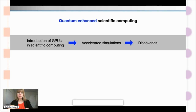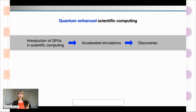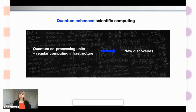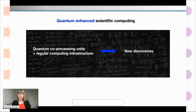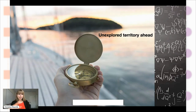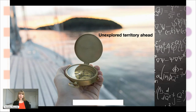The hope or dream is that similarly to how GPUs accelerated scientific computing back in the day, if you were able to have not a GPU but a QPU — a quantum co-processing unit that can be incorporated into your regular computing infrastructure — it could have a similar or potentially even more pronounced effect leading to new discoveries. But this is so much in the beginning — there is so much unexplored territory ahead. We will have to see what time brings; for now it's a very exciting journey.